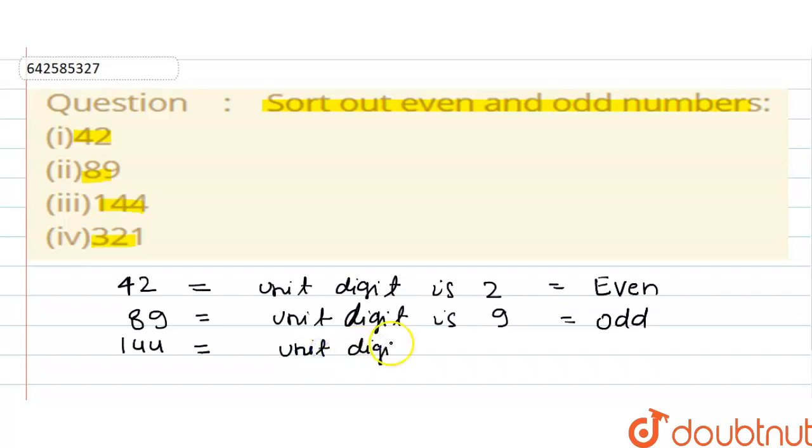144, and 144 unit digit is 4. 4 is even number, so 144 is even number. And the last number will be 321.